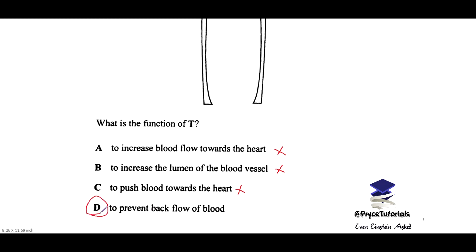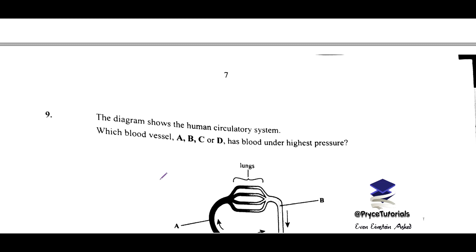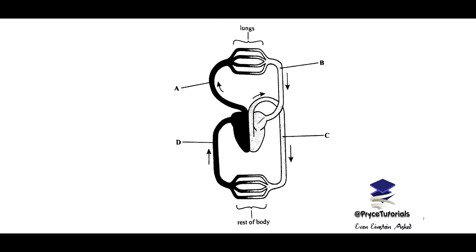Number nine: the diagram shows the human circulatory system. Which blood vessel A, B, C, or D has blood under highest pressure? So you want to analyze the diagram here.